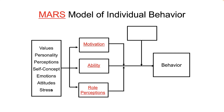Next, we move to R in the MARS model: role perceptions, defined as beliefs about what behavior is required to achieve the desired results. It entails understanding what tasks to perform — what the actual job is, what one does in the job, and whether the employee knows everything they're supposed to be doing. Role perceptions also involves knowledge of the relative importance of the job. Role perceptions are strongly related to job performance, as are motivation and ability — one or two without the other likely leads to low performance.